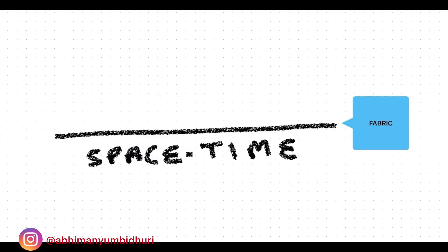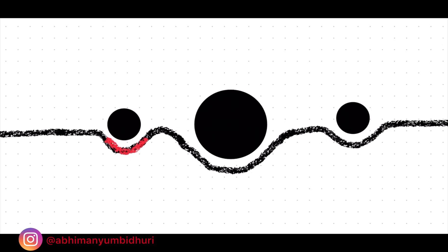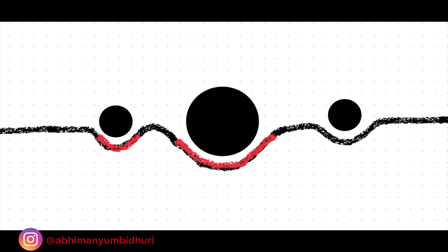To get a basic idea of it, think of space-time as a piece of fabric. Now, if you put any piece of matter over this fabric, you will notice that the geometry of this fabric is getting distorted, causing it to curve. The higher the amount of mass, the more will be the amount of curve. This curve in space-time generates a gravitational pull which is maximum at the center of the matter.